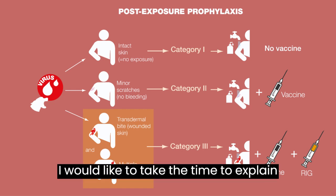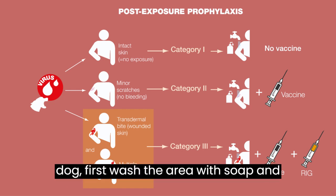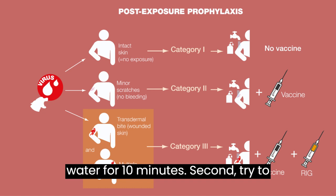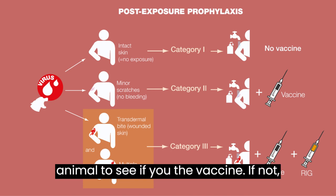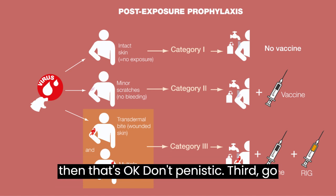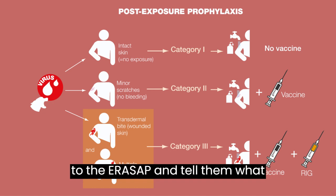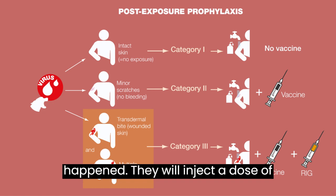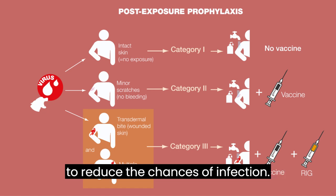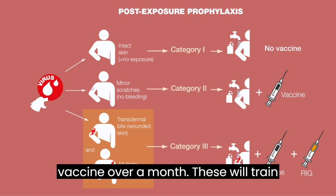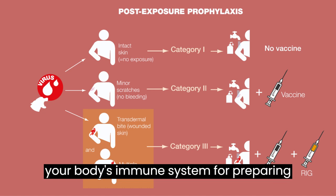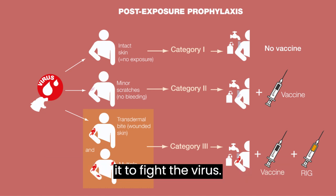Here are the steps to take if you get bitten by a rabid animal. First, wash the area with soap and water for 10 minutes. Second, try to secure the animal that bit you — they will need to test it for rabies to determine if you need the vaccine. If the animal tests negative, that's okay. Third, go to the ER as soon as possible and tell them what happened. They will inject a dose of rabies immunoglobulin close to the bite to reduce the chances of infection. Finally, you will be given four doses of the vaccine over a month to train your body's immune system to fight the virus.